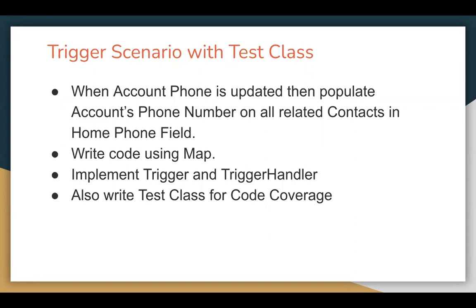The requirement of the scenario is: when an account's phone is updated, we need to populate the account's phone number on all related contacts in the home phone field. So in short, if an account record's phone is updated, you just need to update all the related contacts' home phone field.